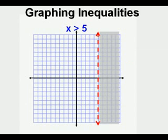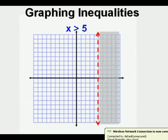Here is x is greater than 5 graphed on the coordinate plane. Note the vertical dashed line at x equals 5. Also note that to the right of the line is the shaded area of the graph. The shaded area means that every point in the shaded area is a solution to x is greater than 5. The vertical dashed line means the boundary line itself is not part of the solution, only the points to the right of the boundary line.